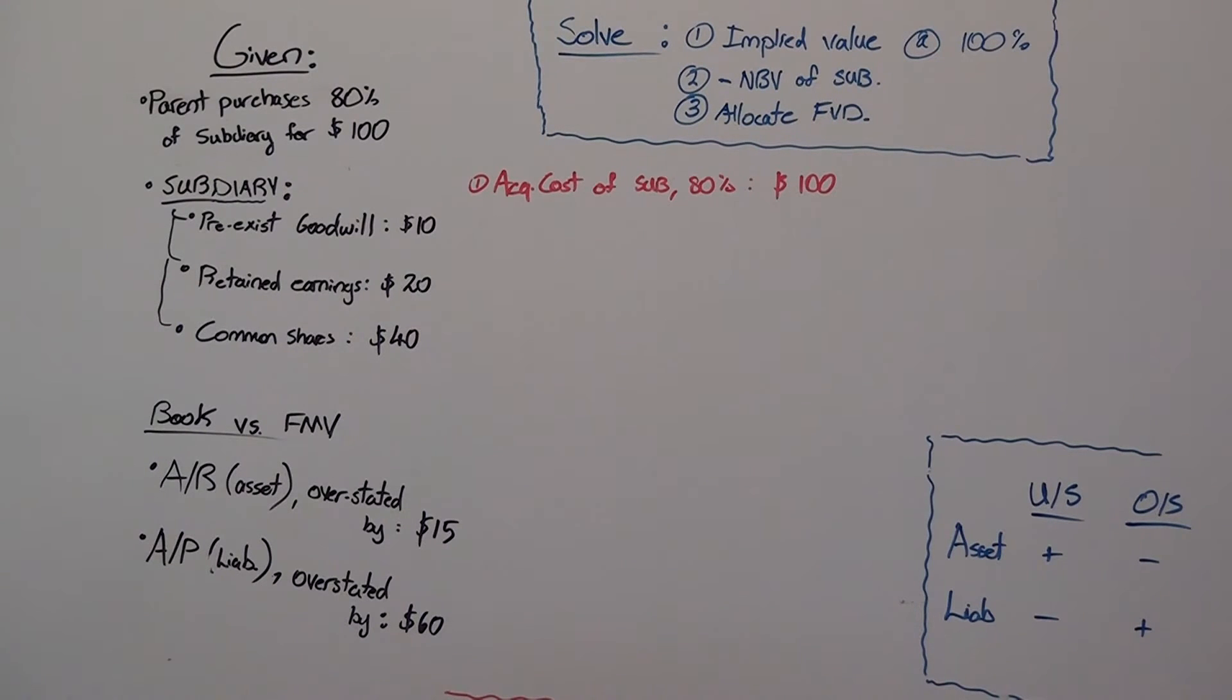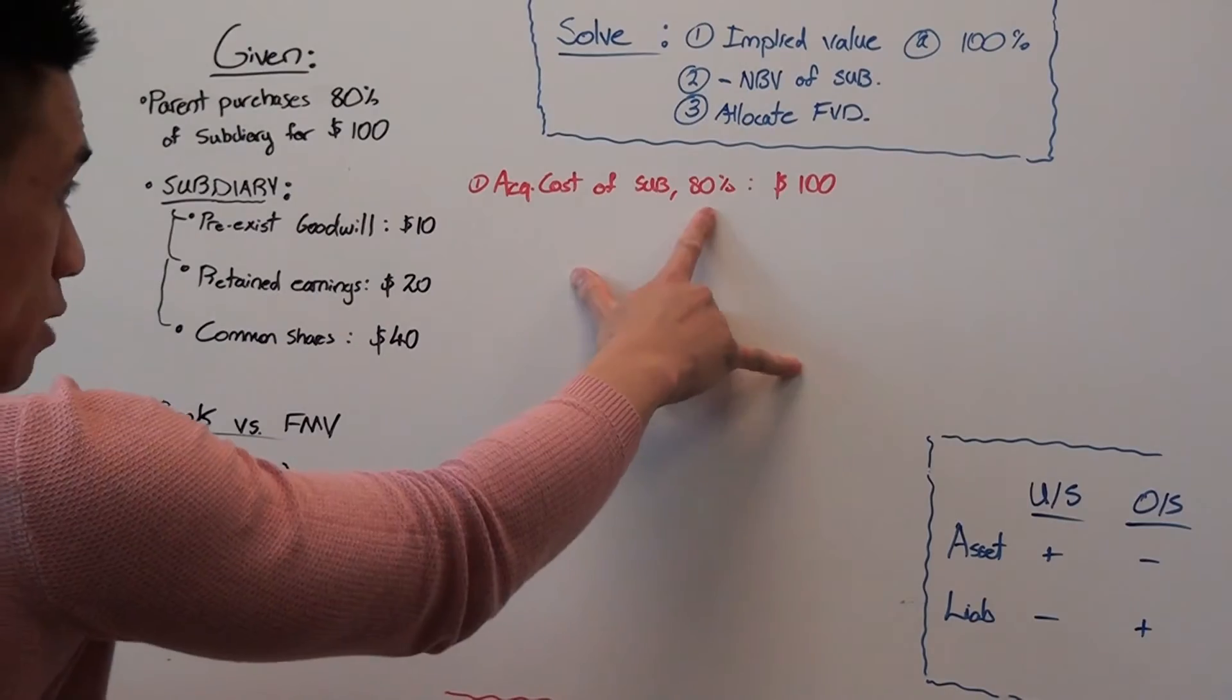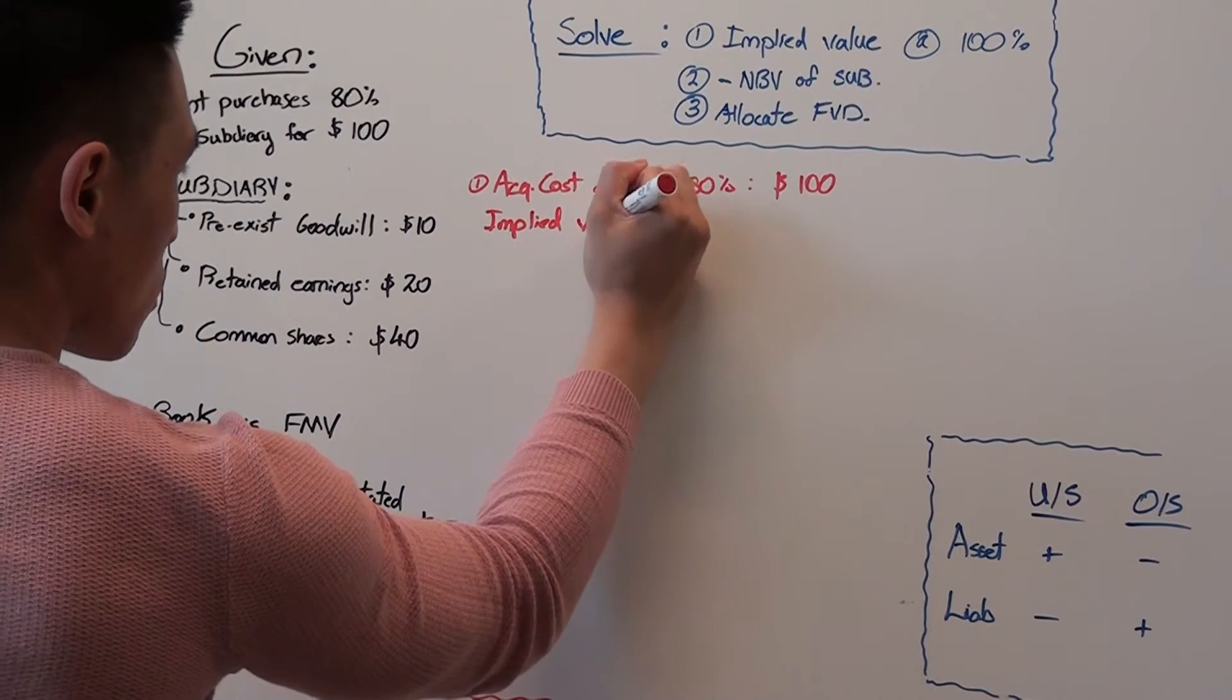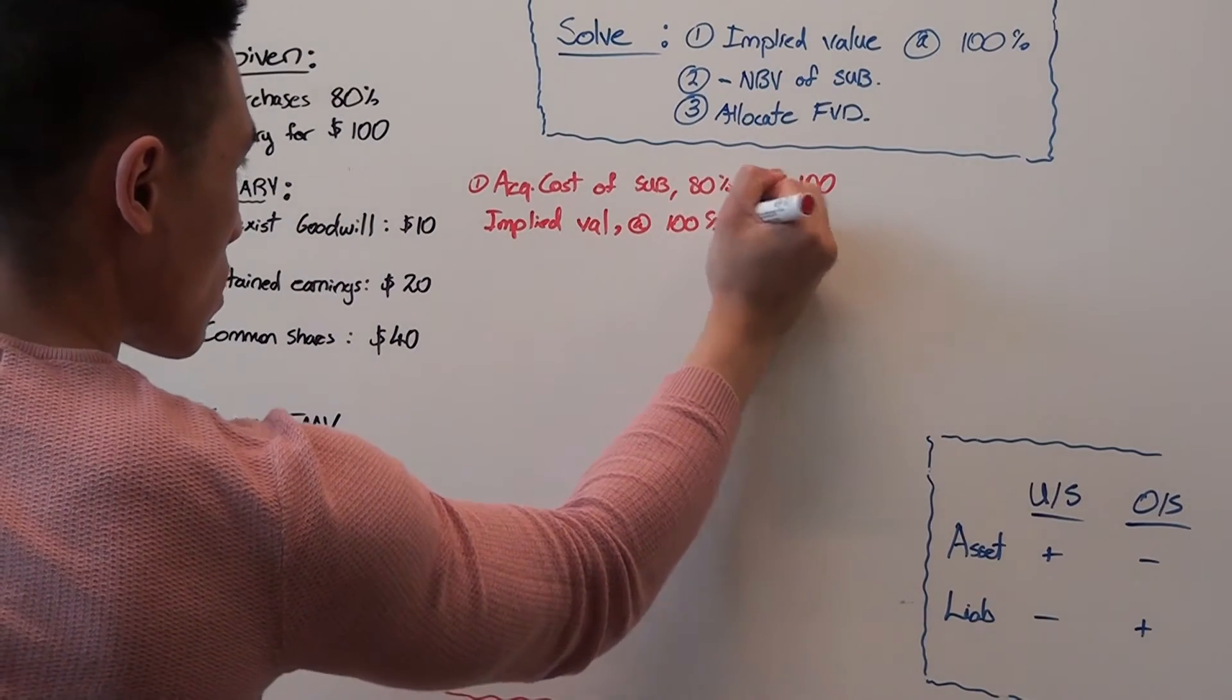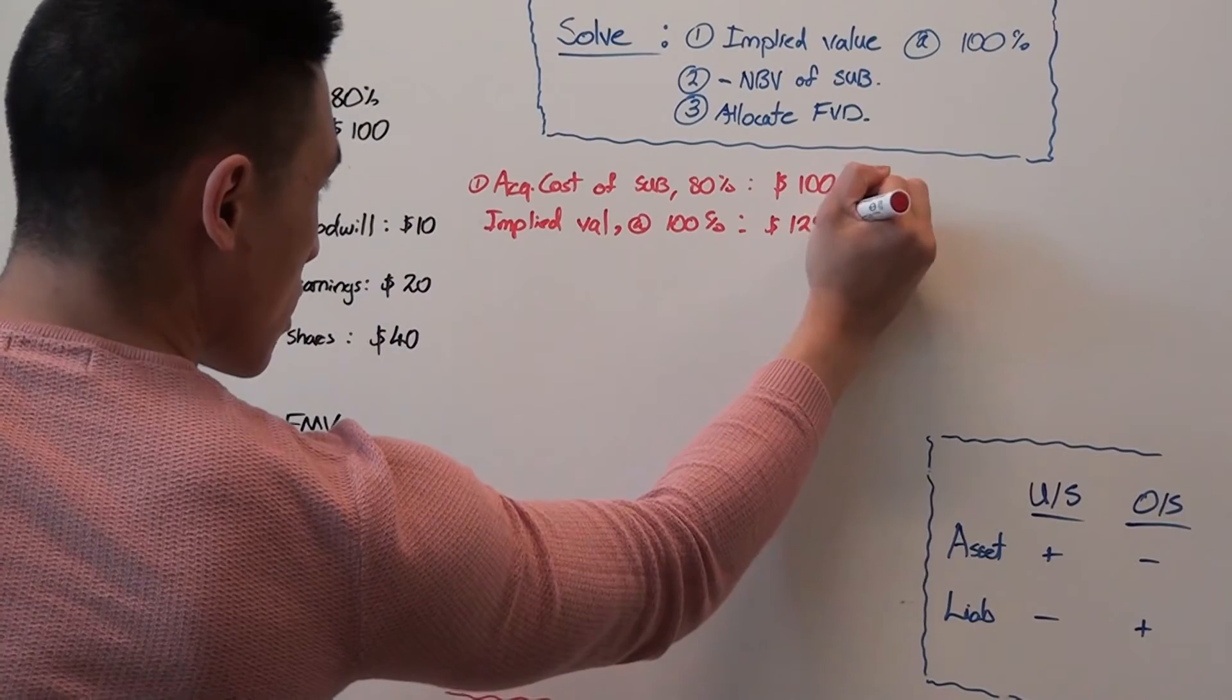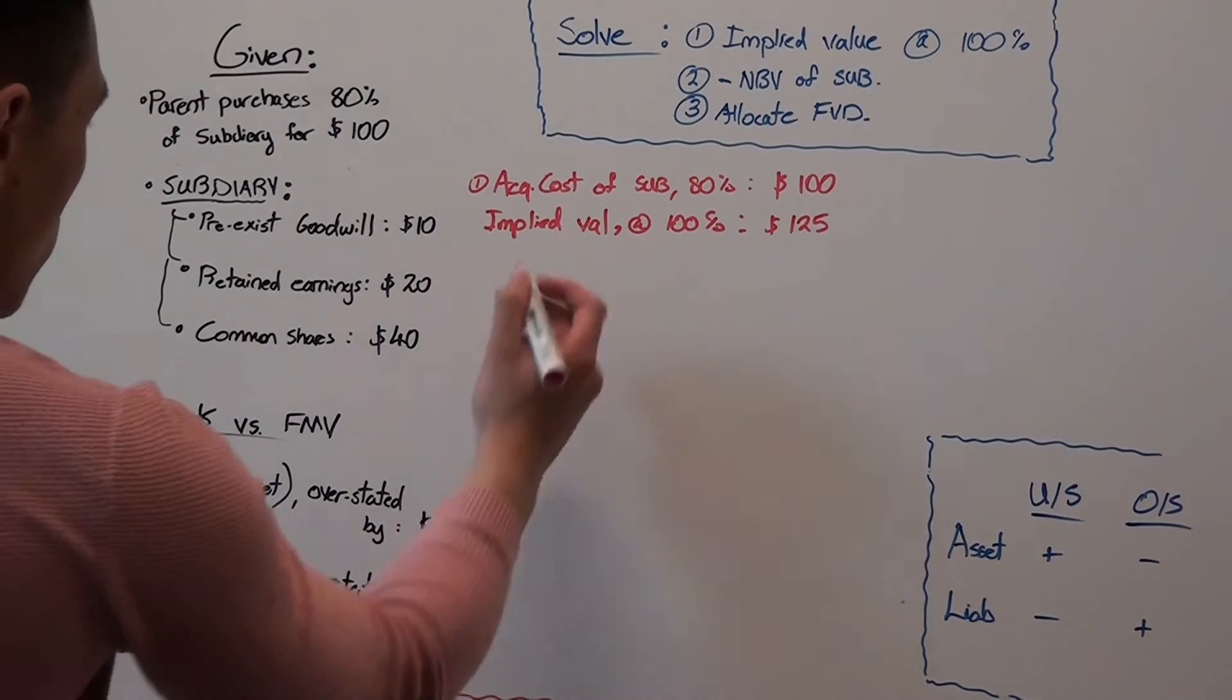Let's start with finding the implied value of the sub at 100%. So acquisition cost of sub at 80% was $100. We'll find the implied value at 100%. So we'll take 100 divided by 0.8 to get $125. Because when a parent chose the sub, it's assumed that we own 100% of it.